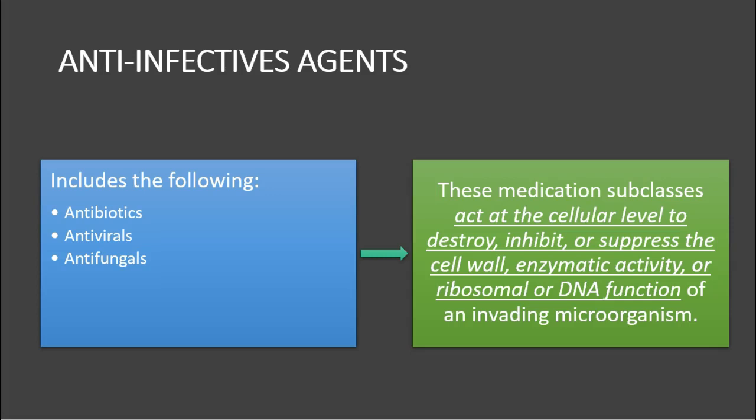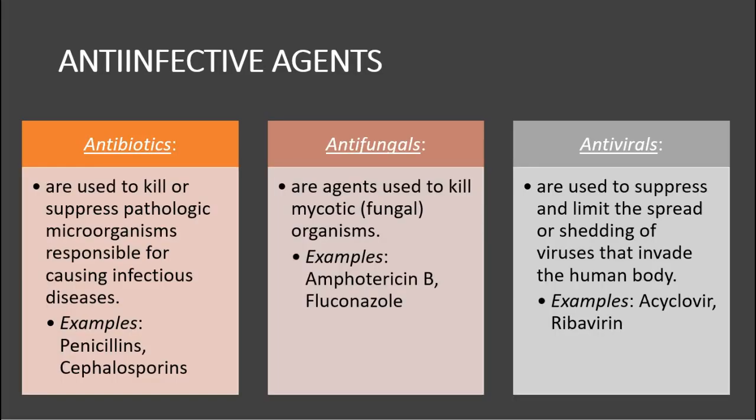Anti-infectious agents include antibiotics, antivirals, and antifungals. These medication subclasses act at the cellular level to destroy, inhibit, and suppress the cell wall, enzymatic activity, or ribosomal and DNA functions of the invading microorganism. Antibiotics are used to kill or suppress pathologic microorganisms responsible for infectious diseases — penicillins are among the most common. Antifungals are agents used to kill mycotic or fungal organisms. Antivirals are used to suppress and limit the spread or shedding of viruses that invade the body.